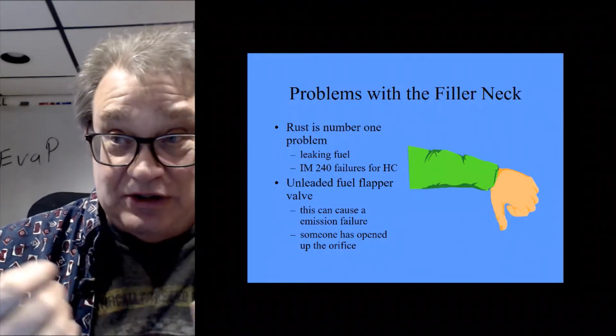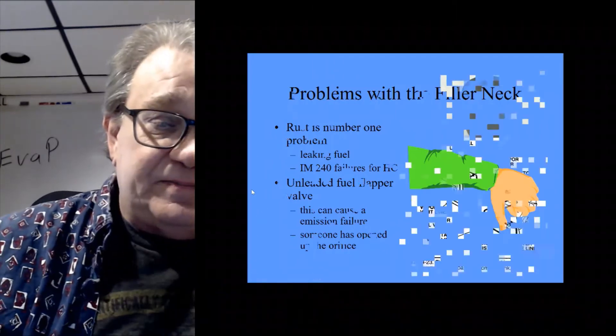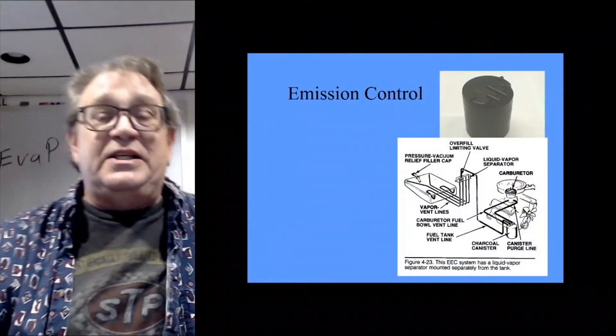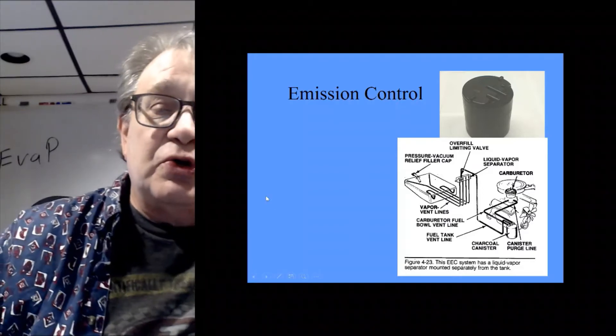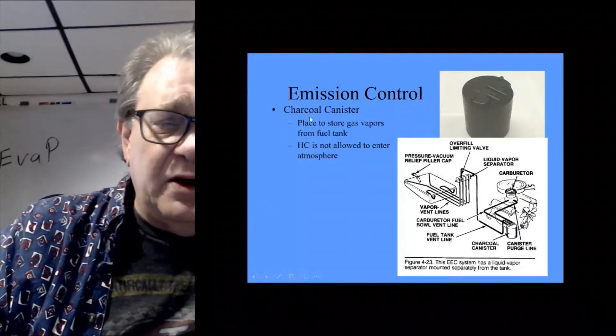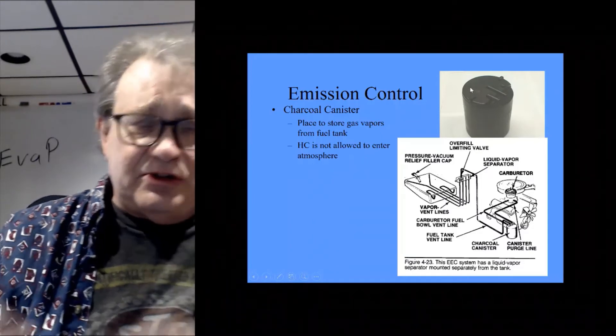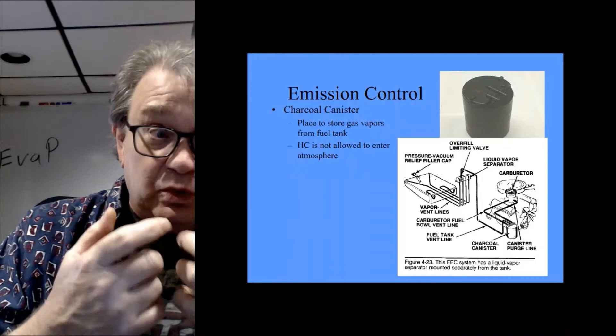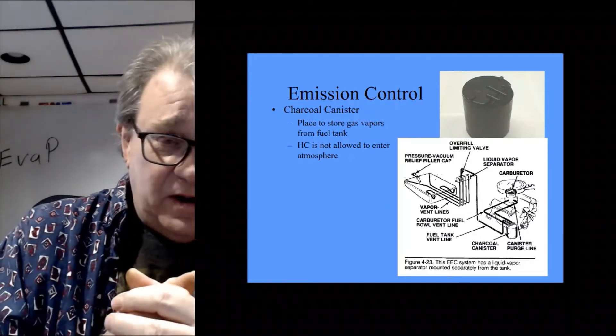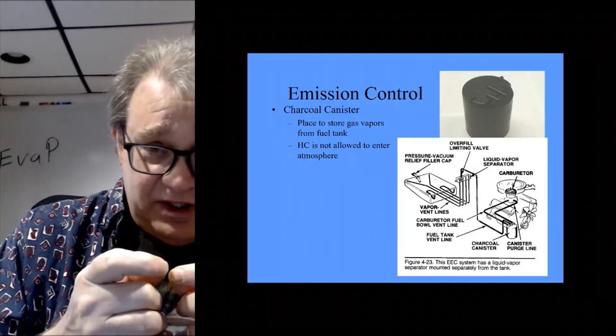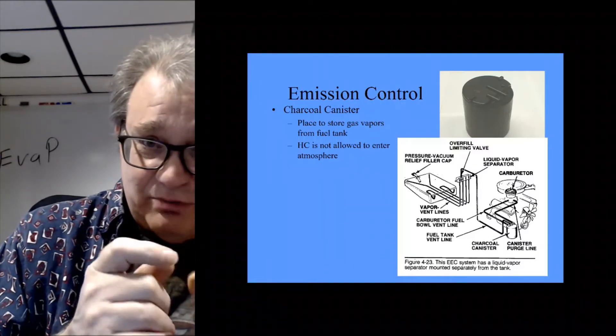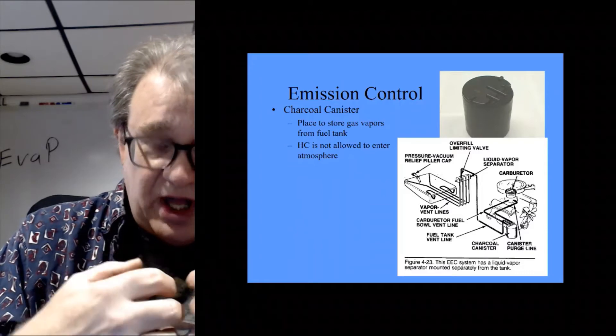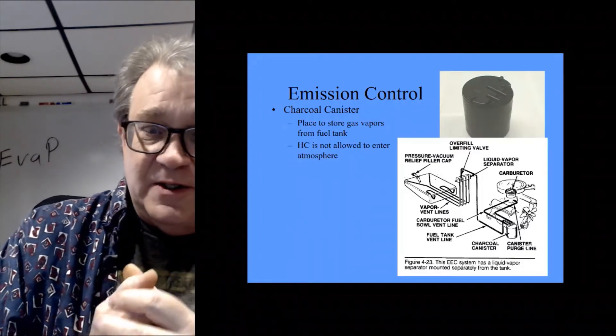Emissions controls, this is the EVAP. Now this is an early picture. This charcoal canister has these little tiny pellets in it, like charcoal, kind of the same thing you use for your Weber. It's got thousands of microscopic holes in it, and that's where the hydrocarbons collect so that we can pull them out later.